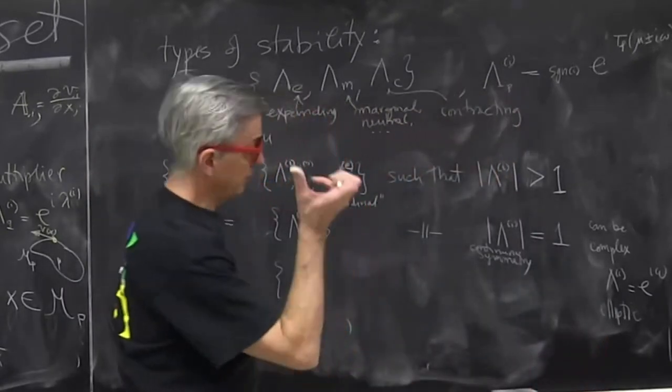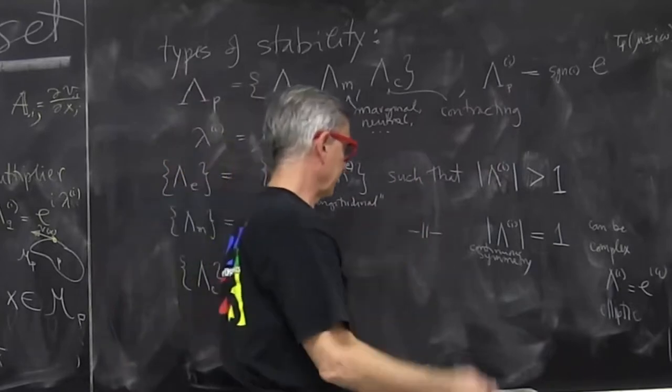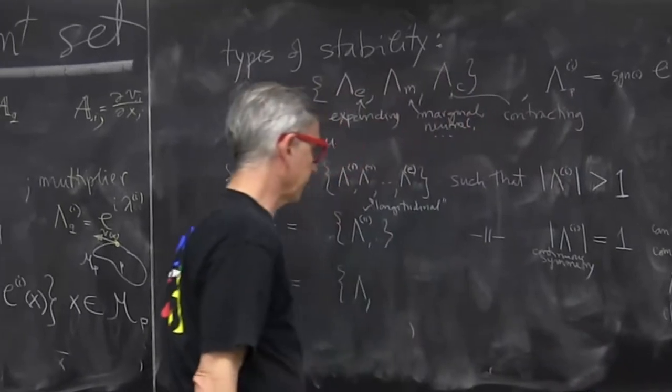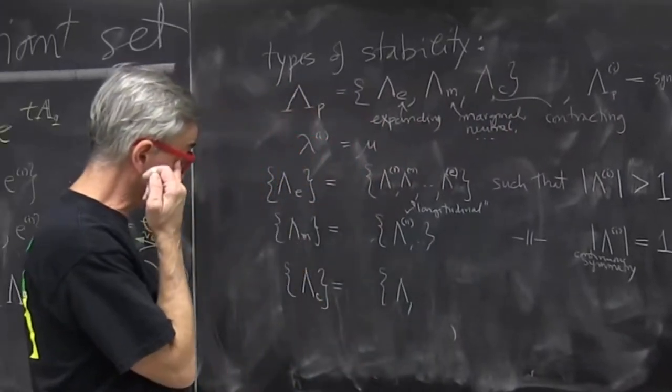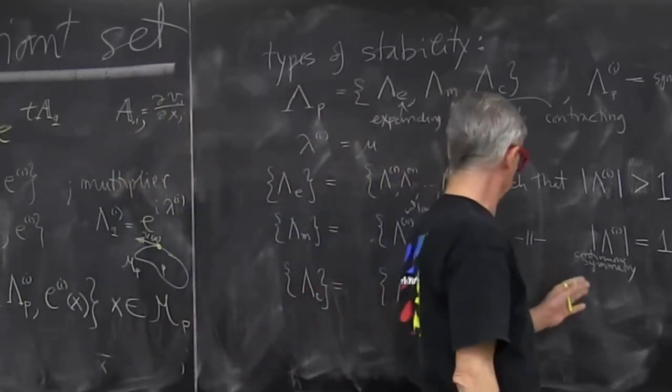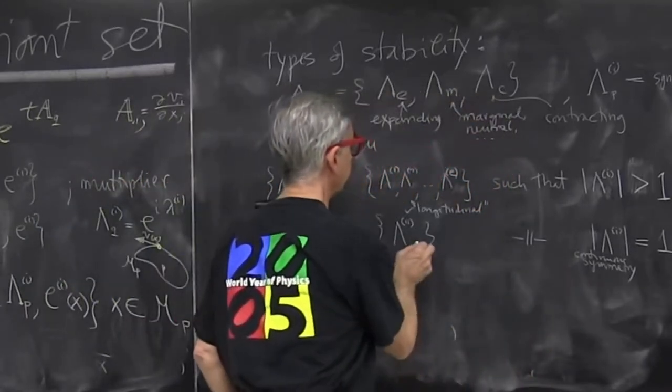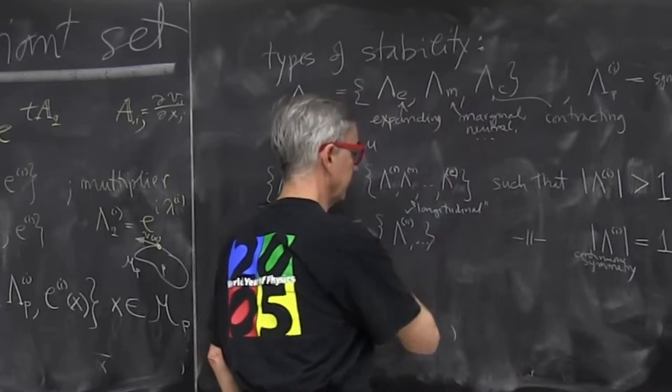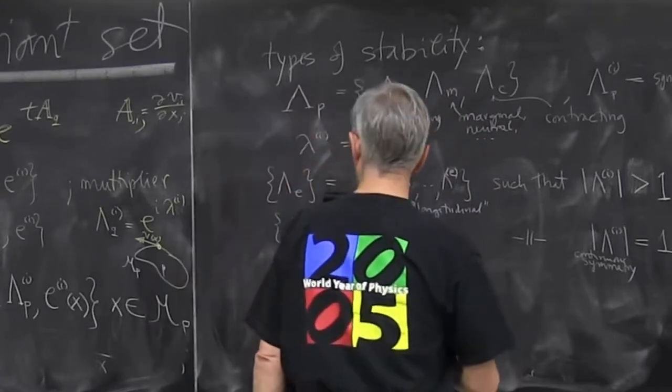There could be rotational symmetries, spherical symmetries, you know, SU3 symmetries, E8, all kinds of weird symmetries could exist. Each one would have a marginal eigenvalue associated with it. And finally, the contracting ones.